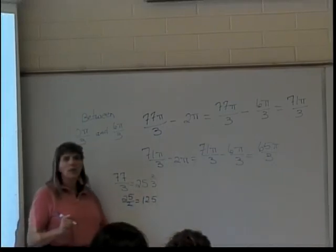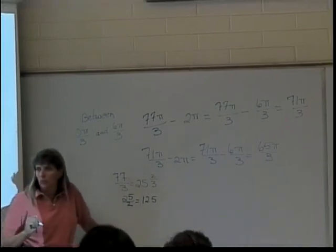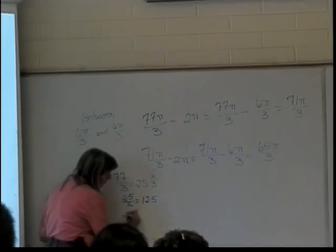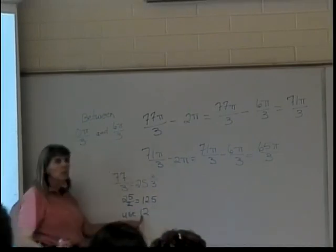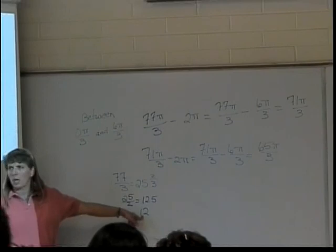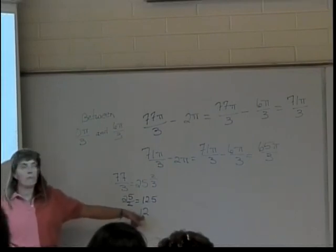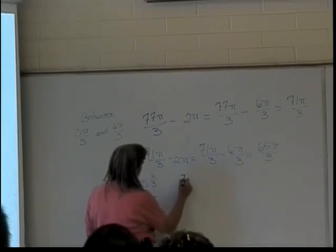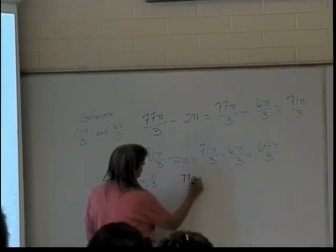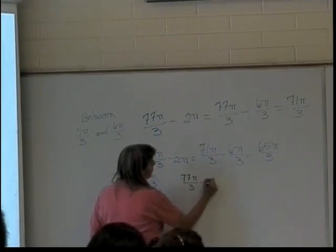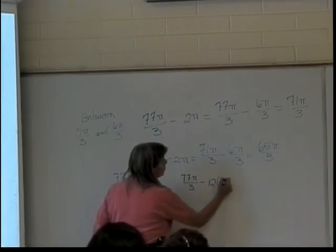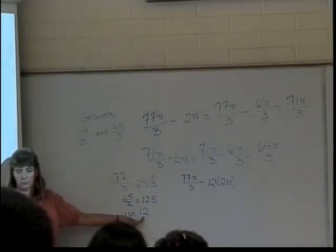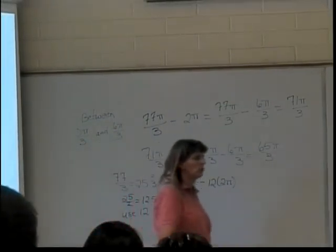So, I'm only going to use the 12. I'm going to subtract off 12 full times around the circle. What is 12 full times around the circle? So, let's see. I'm going to go back to my original 77π over 3 and subtract off 12 times 2π because that's 12 full times around the circle.